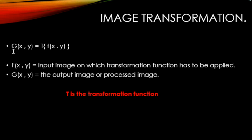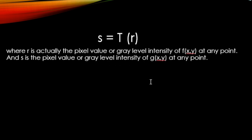Let's consider the equation: g(x,y) = T[f(x,y)]. Here f(x,y) is the input image on which the transformation function is applied, T is the transformation function, and g(x,y) is the output or processed image that we get after applying the transformation function on the input image.